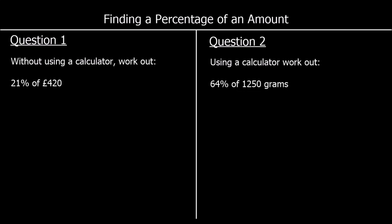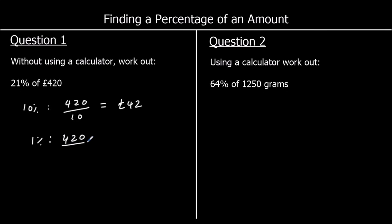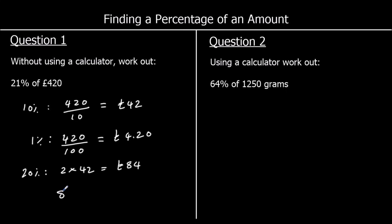To finish up, two questions: question 1 without a calculator, question 2 with a calculator. Question 1, without a calculator, work out 21% of 420. 10% of 420 is 420 divided by 10, which is 42. And 1% is 420 divided by 100, which is 4.20. So 20% is two 42s, which is 84. Then 84 plus 4.20 gives 88.20.